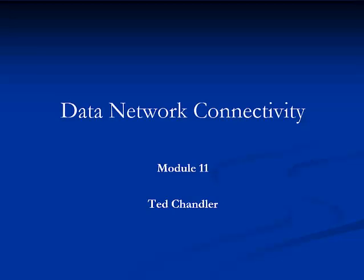In previous modules, you learned about the ways in which computers connect with data networks, how networks connect with each other, and you learned about transmission media and other basic network building blocks. This module explains the active electronics associated with networks and uses the OSI model as a guide, beginning with the physical layer. By the end of this module, you should have a complete view of basic data networking.